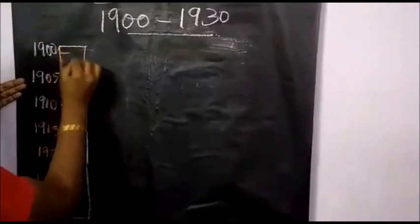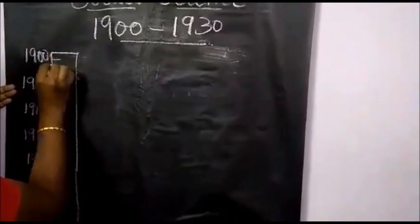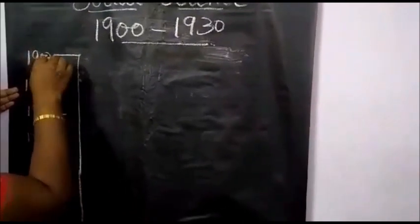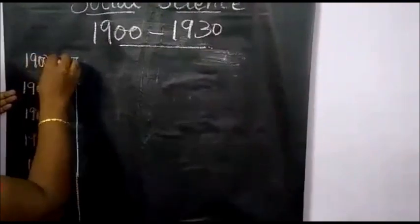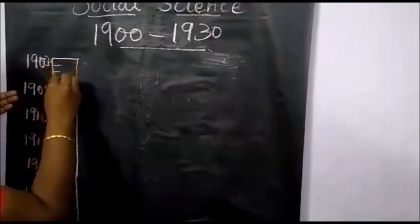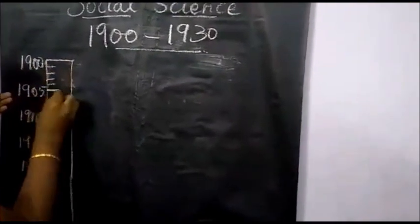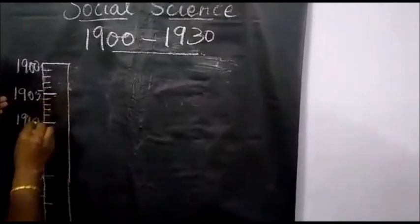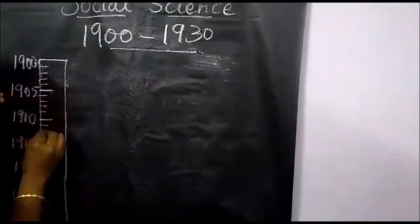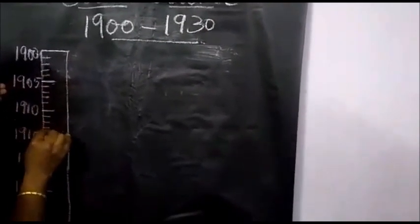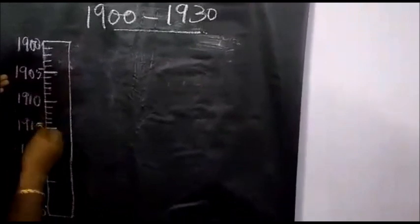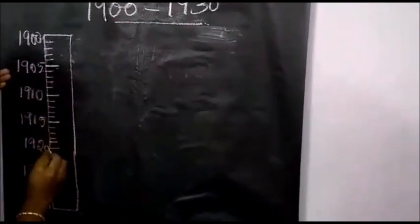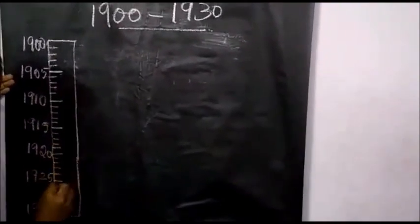In between each marked year, there are 4 lines. Why? Because from 1900 to 1905, you count 1, 2, 3, 4 — that gives you 1905. Then continuing: 6, 7, 8, 9, 10 and so on up to 20. So each 5-year gap has 4 intermediate lines between the marked years.